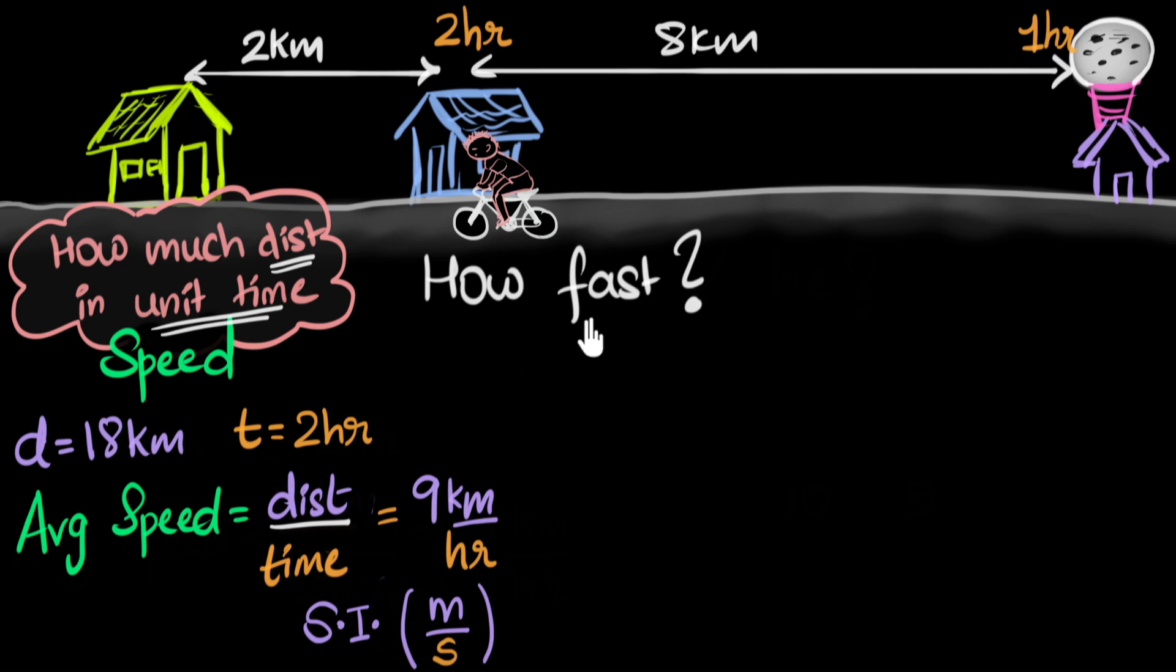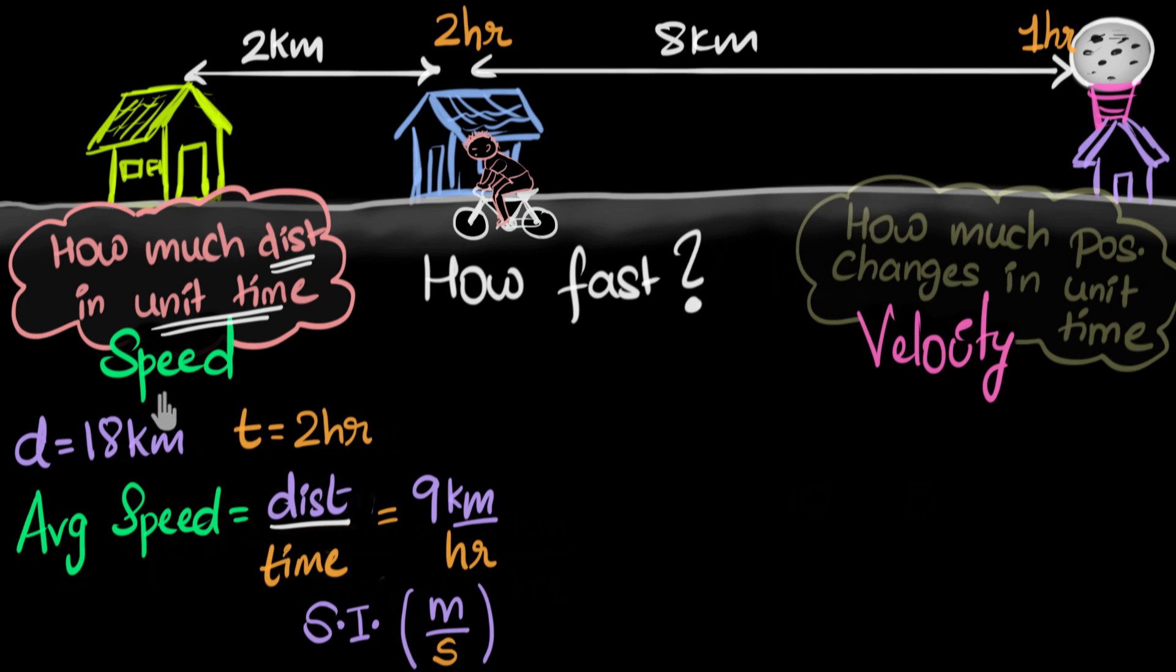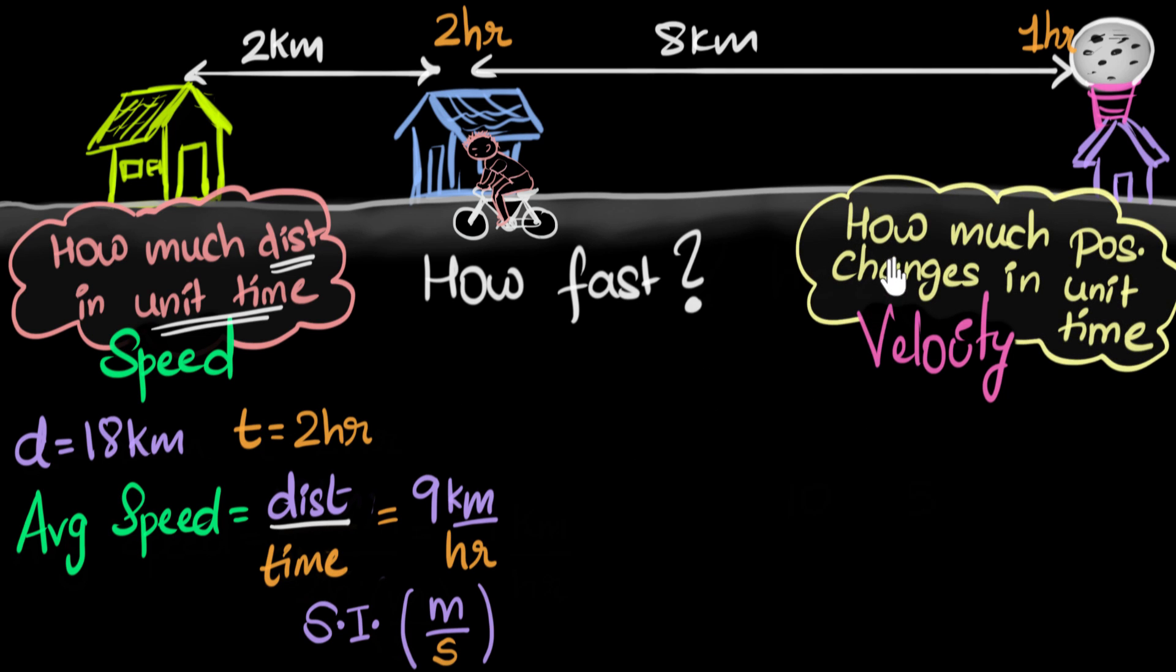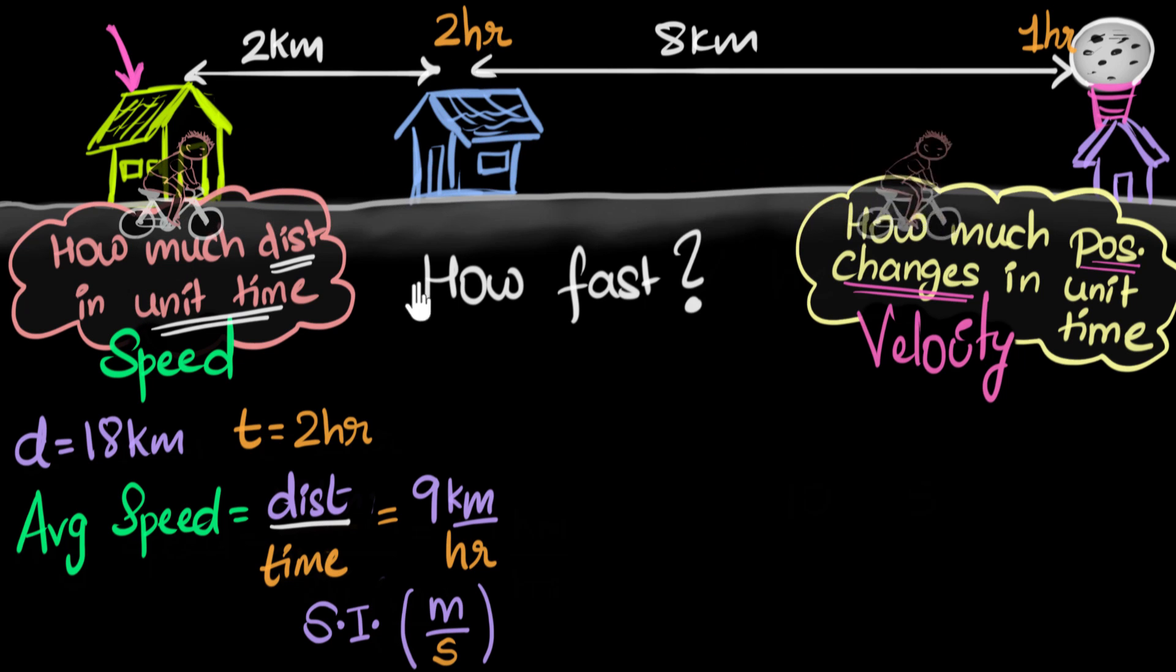All right, now there's a second way to think about how fast he was. The second way is in terms of velocity. There's a small difference between velocity and speed. Velocity talks about how much his position changes in a unit time. So when we talk about velocity, you don't look at the distance, but you only keep track of his position changes. So let's take our friend's example to understand better. Where was Satra in the beginning? Well, he was here. This was his initial position, initial location. At the end of two hours, where was he?